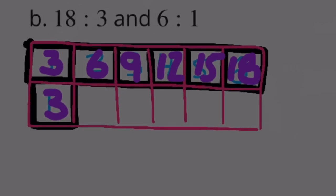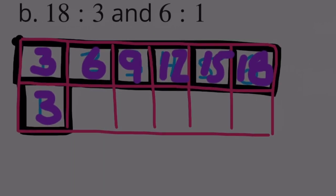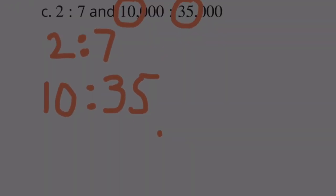Problem C: 2 to 7 and 10,000 to 35,000. 10,000 to 35,000 is no different than 10 to 35. If we had 2 to 7 five times greater, 2 times 5 would be 10 and 7 times 5 would be 35. The same thing could be done to make these things 10,000. Like 2 times 5,000 would get you to 10,000.